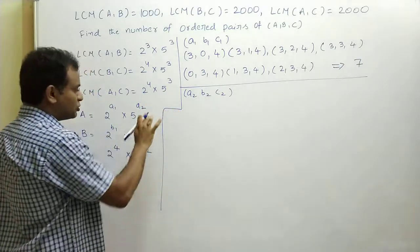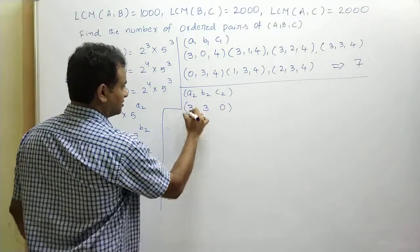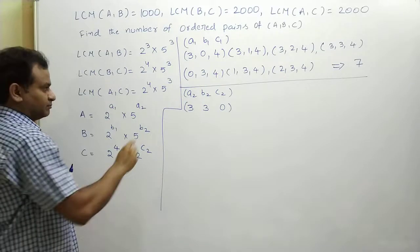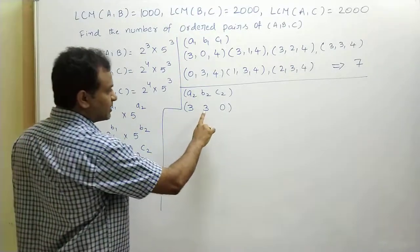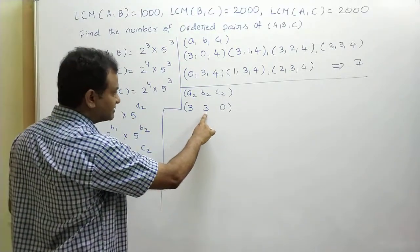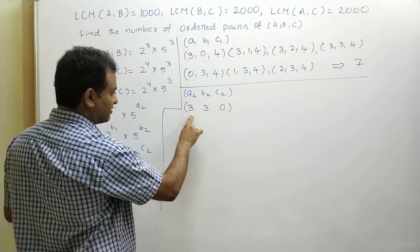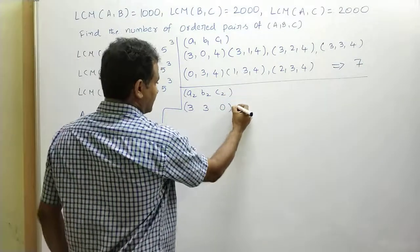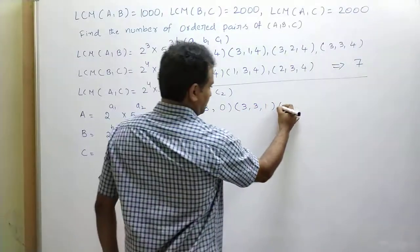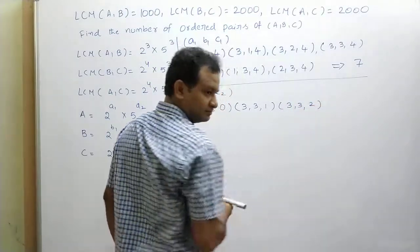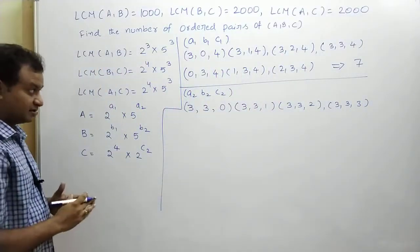If a2 = 3 and b2 = 3, then c2 can be 0, 1, 2, or 3 — all four satisfy the LCM conditions. So (3,3,0), (3,3,1), (3,3,2), (3,3,3) are four possibilities.